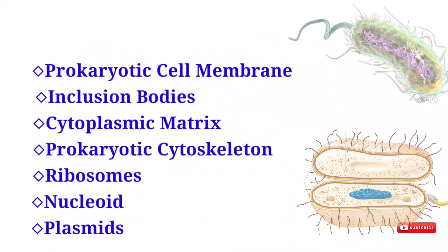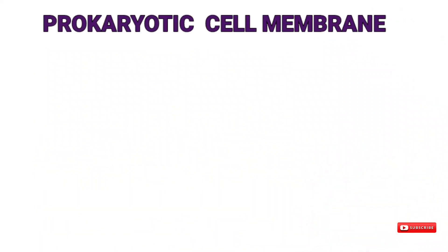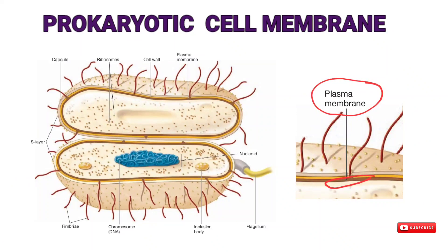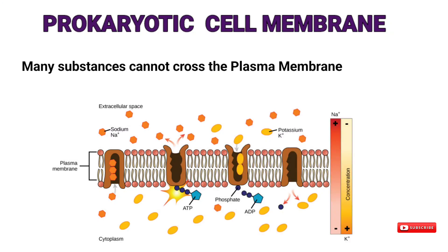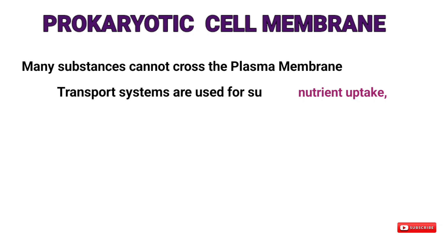First we start with the prokaryotic cell membrane. The plasma membranes of prokaryotic cells are particularly important because they must fill an incredible variety of roles. In addition to retaining the cytoplasm, the plasma membrane also serves as a selectively permeable barrier — it allows particular ions and molecules to pass either into or out of the cell while preventing the movement of others. The membrane prevents the loss of essential components through leakage while allowing the movement of other molecules.